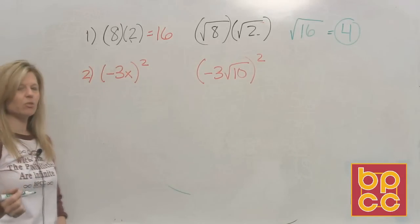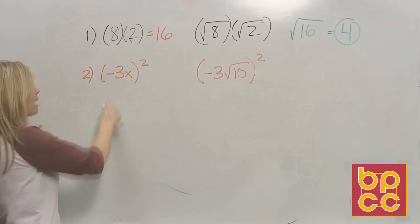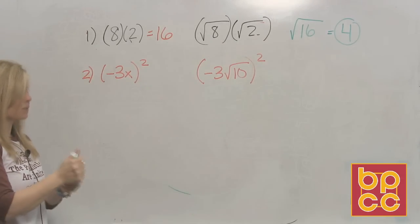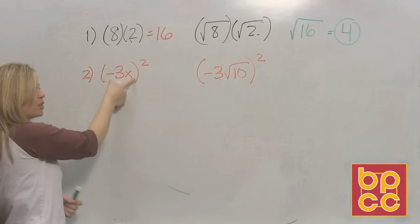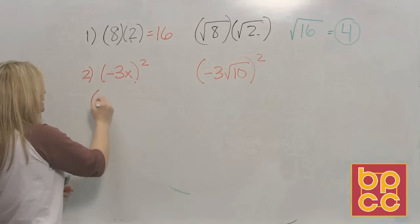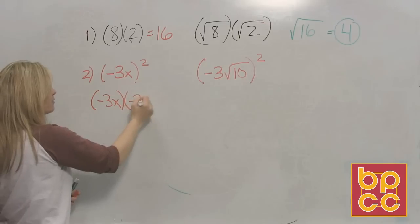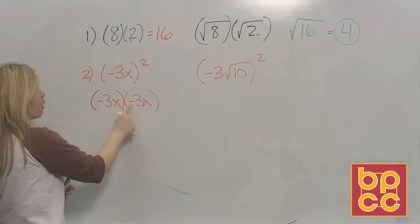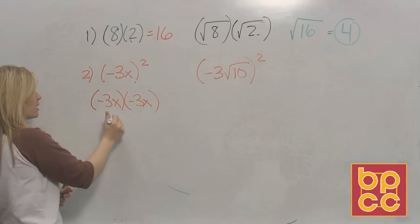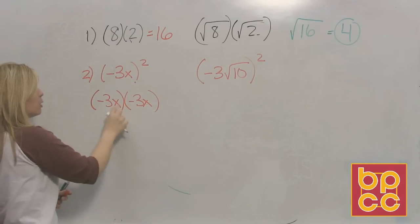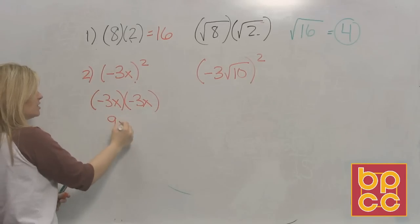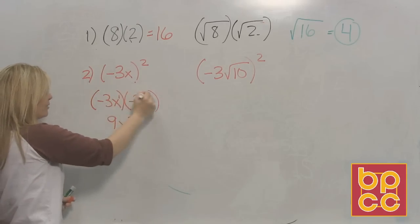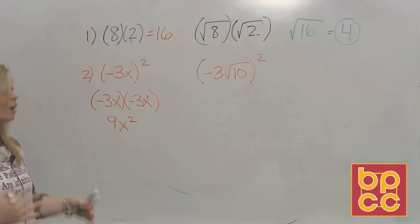Let's look at example two. What did it mean when I wrote negative three x squared? We've already discussed that squaring means to multiply twice, so we write negative three x times negative three x. From our previous modules, we multiply the coefficients first: negative three times negative three is nine. Then we multiply the variables: x times x is x squared, because when you multiply variables you add their exponents.